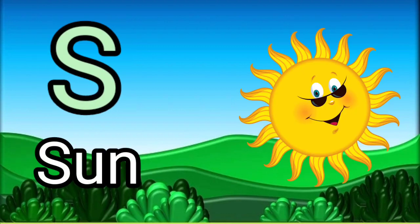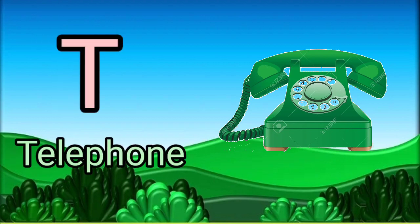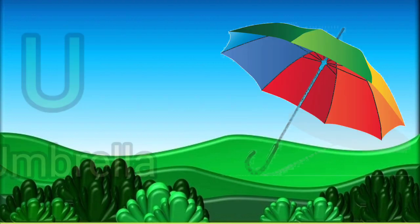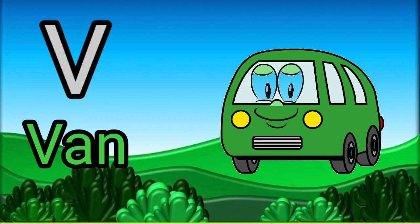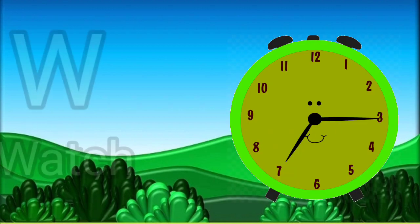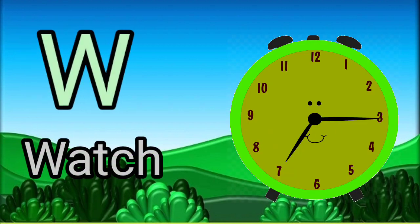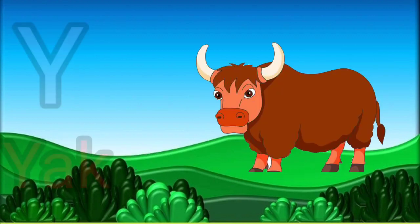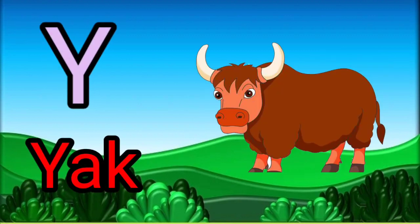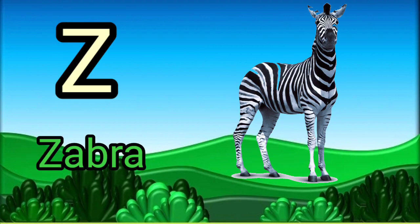S for sun, T for telephone, U for umbrella, V for van, W for watch, X for xylophone, Y for yard, Z for zebra.